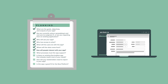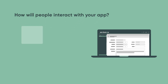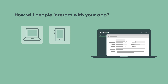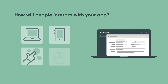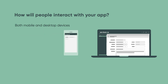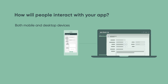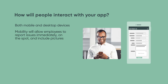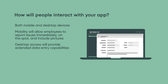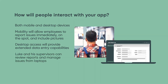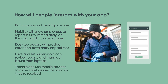Let's talk about scale. How will people interact with your app — will they use computers, mobile devices, or both? Will they take action with the swipe of a finger or the click of a mouse? When you understand how people will access your app, you can design a better user experience. Luke's vision is that people will access the app with both mobile and desktop devices. Mobility will allow employees to report issues immediately, on the spot, and include pictures to help the technician. Desktop access will provide extended data entry capabilities, while technicians can use mobile devices to close safety issues as soon as they're resolved, anywhere on the premises.